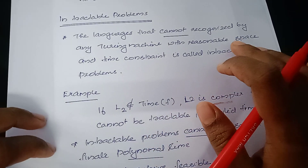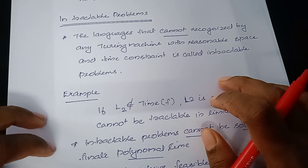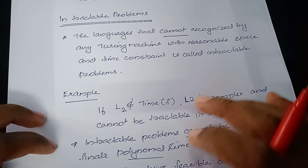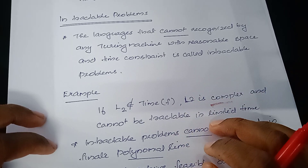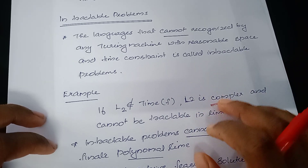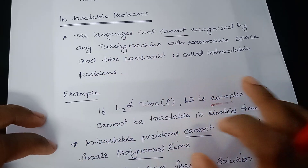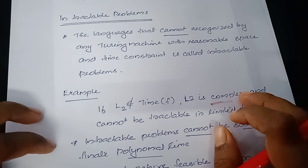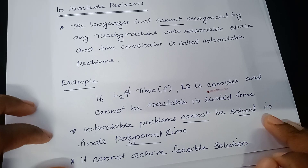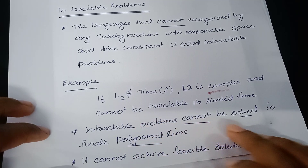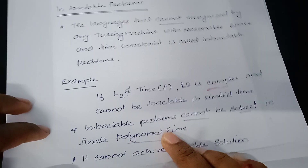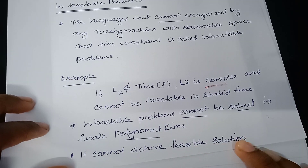For example, if a web page is loading and taking too much time, and finally shows 'connection timed out' — we cannot say how much time it is going to take to give a solution. Intractable problems are very hard to solve, complex, and cannot be solved in finite time or finite storage space. Intractable problems cannot be solved in finite polynomial time and cannot achieve a feasible solution.